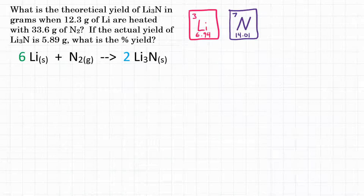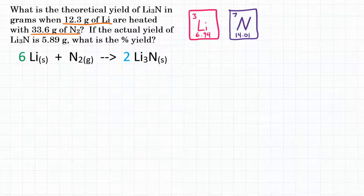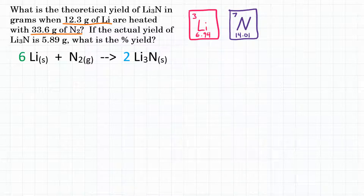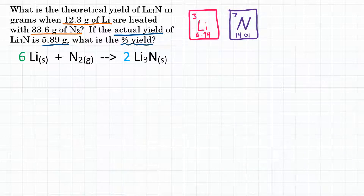In the first part, we're going to take the masses of our two reactants — 12.3 grams of lithium and 33.6 grams of nitrogen — and do a limiting reactant stoichiometry problem to calculate our theoretical yield. Then in the second part, we take that theoretical yield with our actual yield of 5.89 grams and calculate our percent yield. Let's set up the first question.